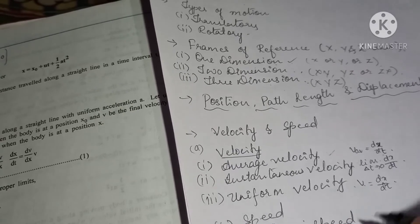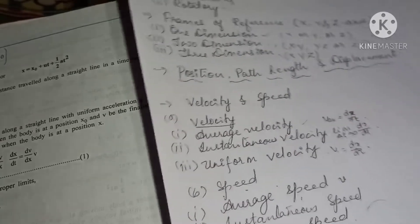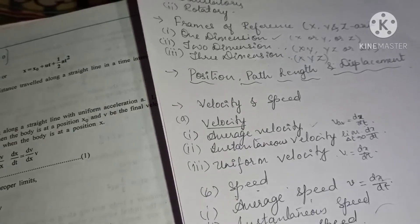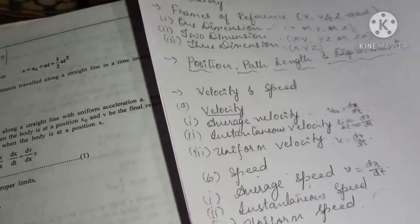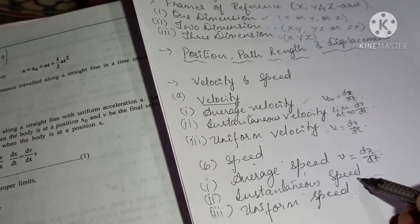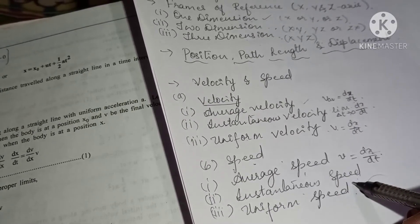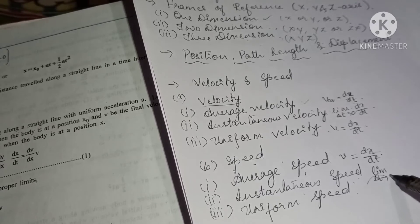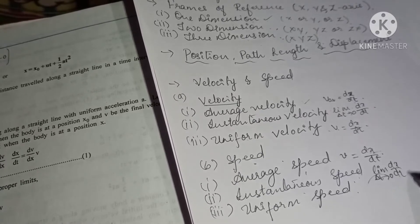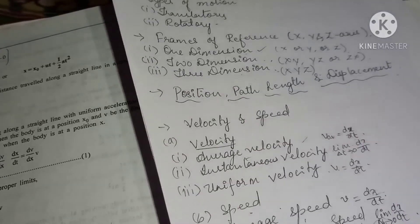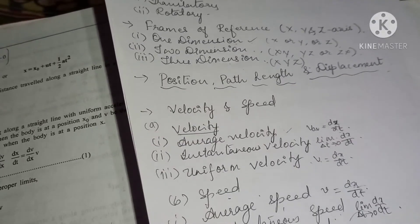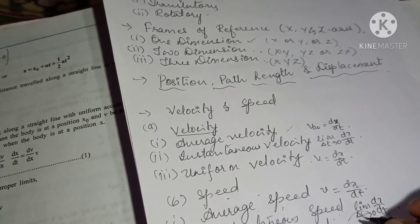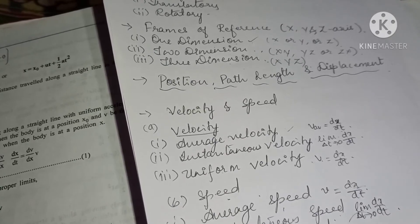Speed is denoted by v = dx/dt, where dx is the distance. Instantaneous speed is the limit as delta-t tends to zero of dx/dt. Uniform speed means equal distance covered in equal intervals of time.